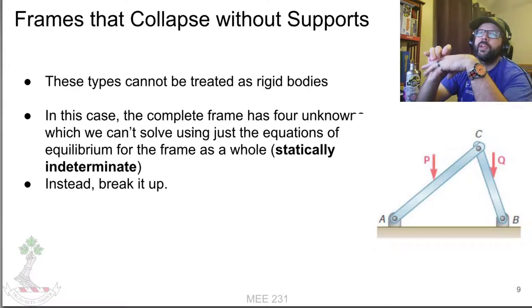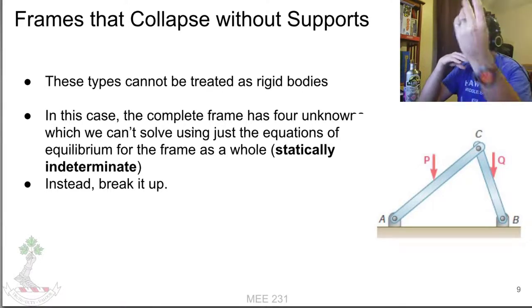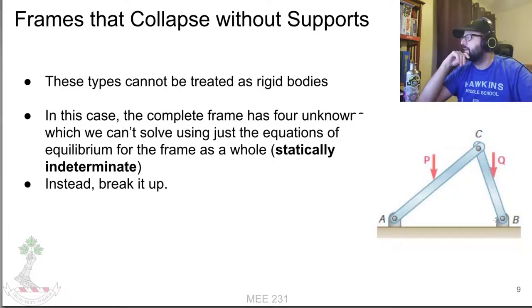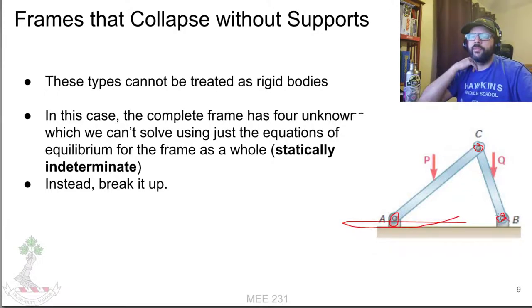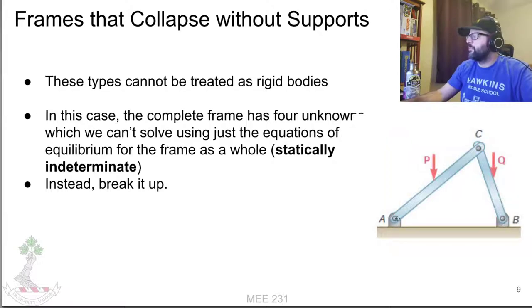Sometimes we might not be able to easily do our equilibrium to find the reactions. That'll happen if you have some sort of frame that collapses without its support. For this example, this frame here has two pinned connections at A and B and another pin at C. If we remove A and B, this thing's just going to collapse. Some types of frames are set up such that they themselves are rigid, but they would not be rigid without their supports.